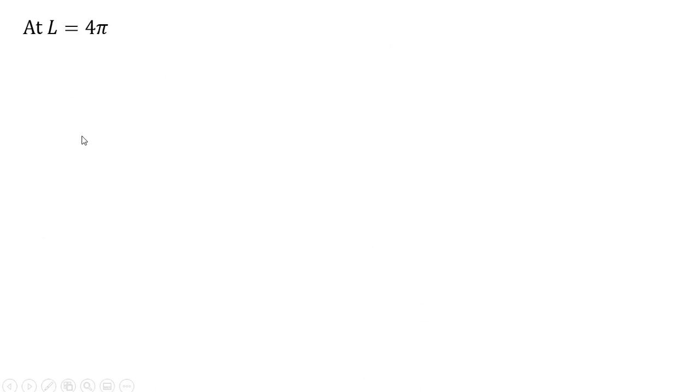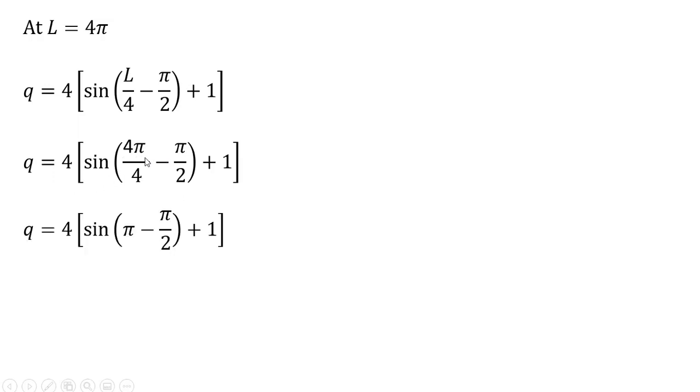Now to figure out the output level at four times π, which would be the maximum output, we're going to replace this L in the production function with four π. And now we're just going to simplify this. So four π divided by four is just π. In parentheses here, it's just going to simplify down to π divided by two.